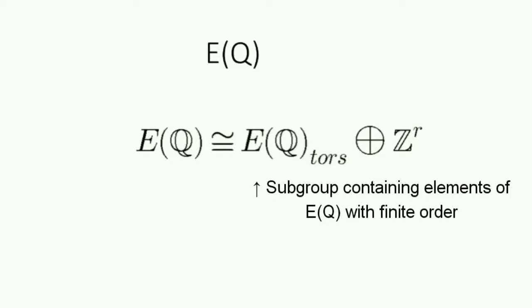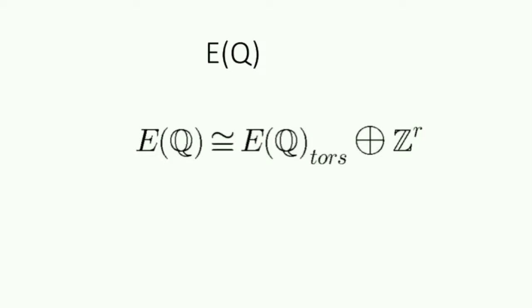Now, since we know that E(Q) can be finitely generated, we also must know this. This basically states that if we group all the elements of E(Q) of finite order and directly product it with r copies of set of integers, we get something similar to E(Q).